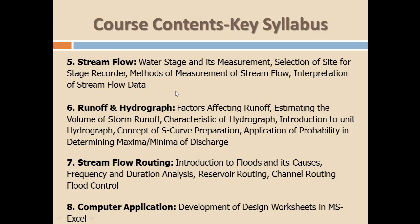Chapter five is about stream flow. We will discuss what stream flow is, what a water gauge is, how stream flow can be measured, how the velocity of a river can be measured, and how discharge can be determined using the velocity and area method.